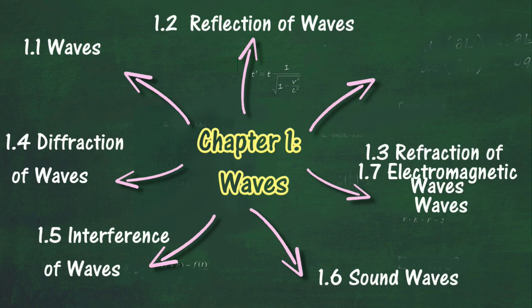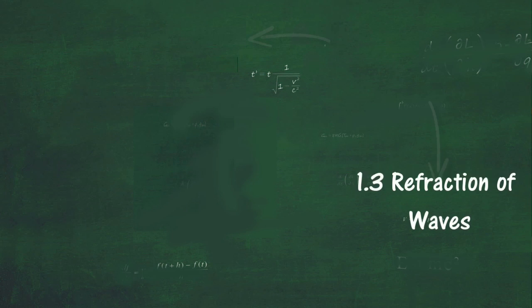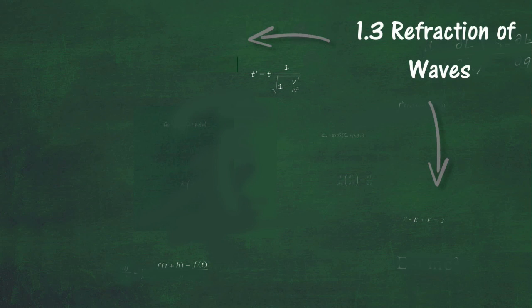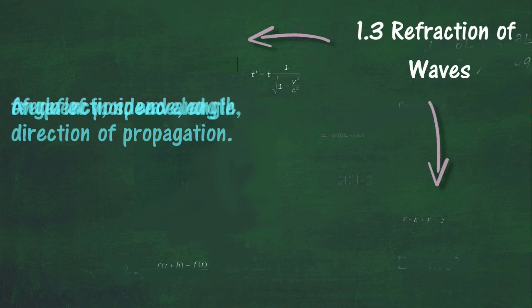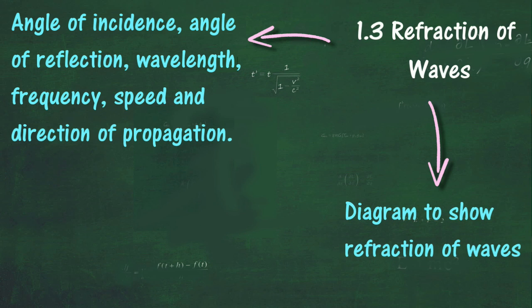In Section 1.3, we will learn about refraction of waves. At the end of this section, you should be able to describe refraction of waves in terms of the angle of incidence, angle of refraction, wavelength, frequency, speed, and direction of propagation, and draw a diagram to show refraction of waves.